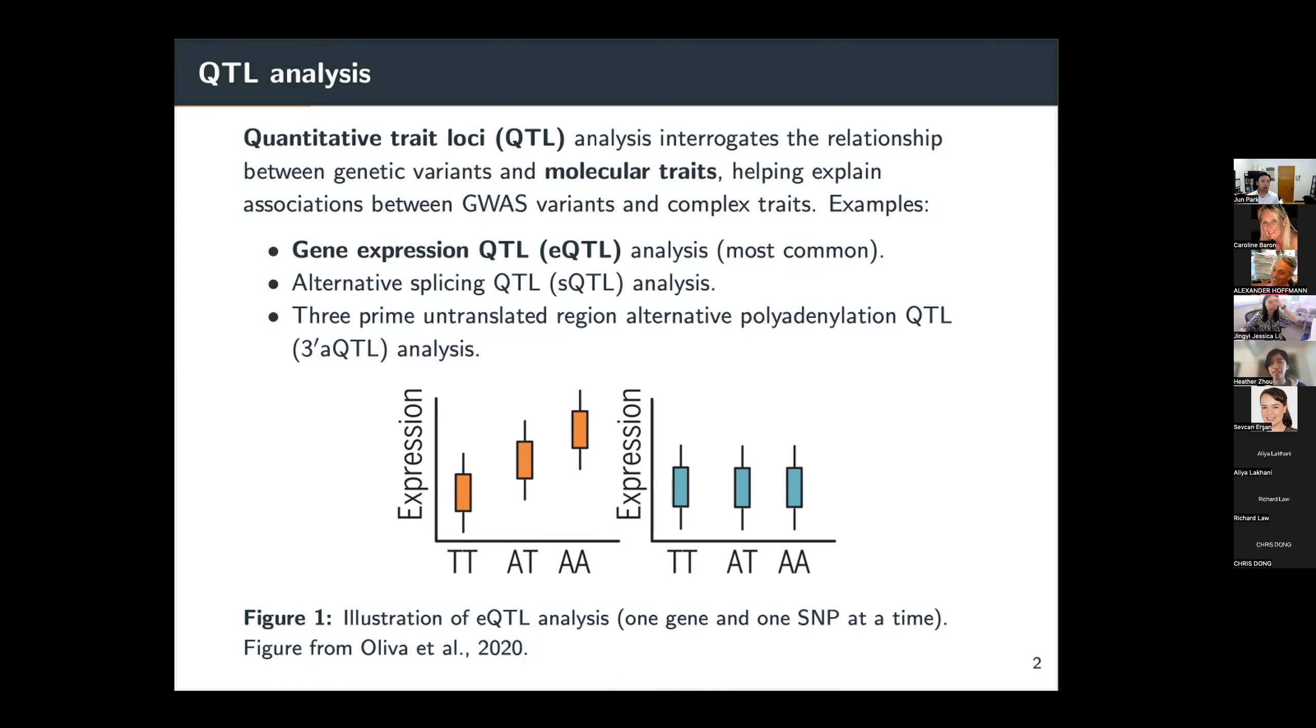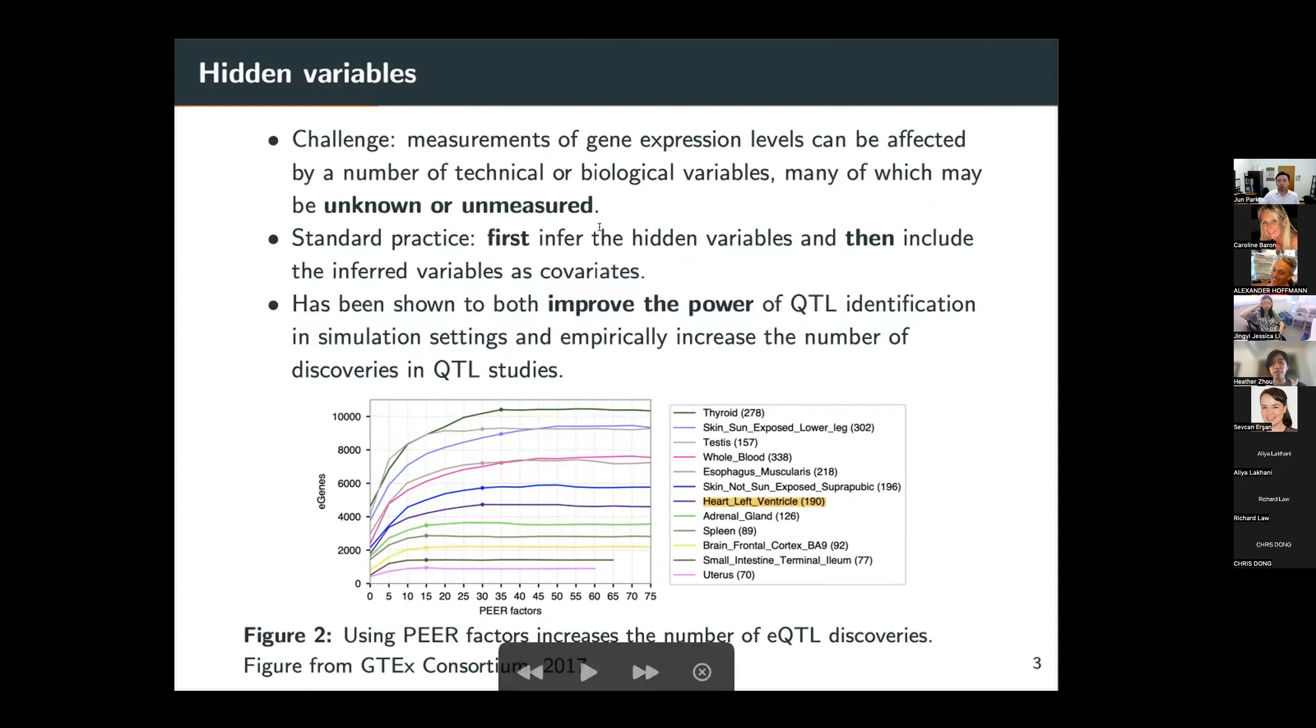So one challenge in QTL analysis in general is that measurements of gene expression levels or other molecular phenotypes can be affected by a number of technical or biological variables. If these variables are observed, then it's simple and we can just include them as covariates in our QTL analysis. But what's difficult is that many of these variables may be unknown or unmeasured, which makes them hidden variables.